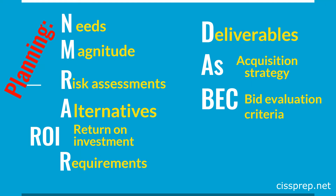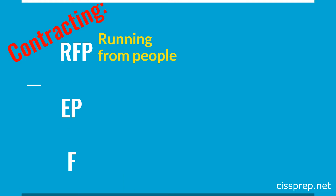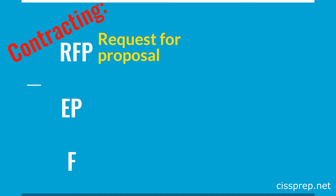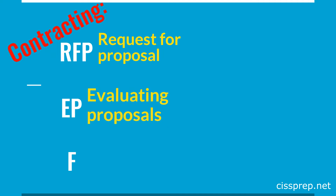For the contracting phase mnemonic, we'll ask: the PC is mad at us for running from people, especially people that are furious. The R in parentheses stands for request for proposal — where the request goes out to the public for anyone that can handle the needs, including statements of work, terms and conditions, and any certifications or pre-qualification conditions. EP is for evaluating the proposals submitted by respondents to the RFPs. Finalizing refers to finalizing the contract negotiations — software risks can be mitigated by changing the terms and conditions of the contract in this phase.